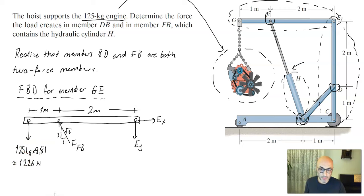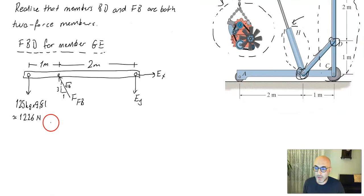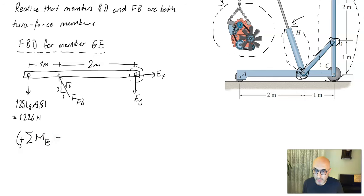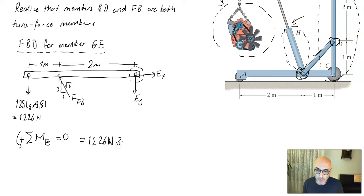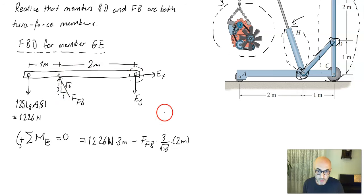Writing the equilibrium equations: taking moments about point E, counterclockwise positive equals zero, we get 1226 N times three meters minus the vertical component of FFB — which is FFB times 3 over root-10 — times two meters equals zero.